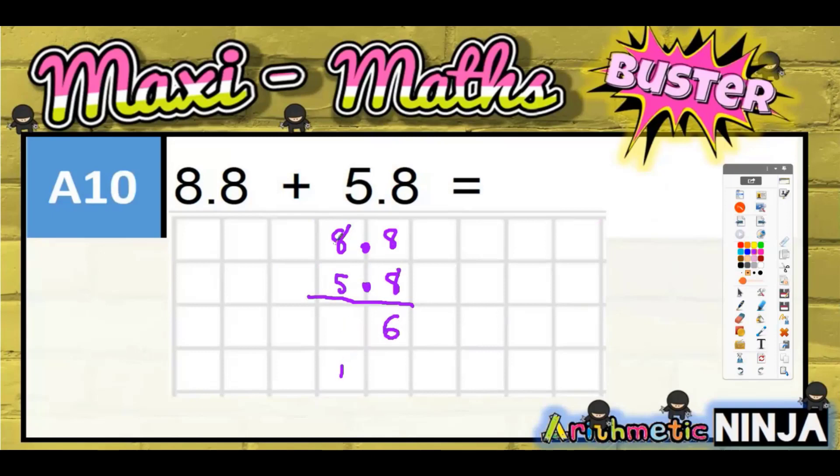8 plus 8 is 16, 6 in carry the 1. 8 plus 5 is 13, plus the 1 is 14. Now just remember the answer is not going to be 146, you just need your decimal point in lined up there. Some people often forget to put the decimal point in.